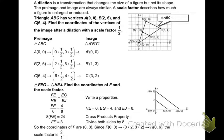A dilation is a transformation that changes the size of a figure but not its shape. The preimage and image are always similar. A scale factor describes how much a figure is enlarged or reduced. Triangle ABC has vertices A(0, 0), B(2, 6), and C(6, 4). Find the coordinates of the vertices of the image after dilation with a scale factor of 1/2. If it's a scale factor of 1/2, what they do is they just take everything times 1/2. So 0 times 1/2 and 0 times 1/2 gets me (0, 0). 2 times 1/2 and 6 times 1/2 is (1, 3). 6 times 1/2 and 4 times 1/2 is (3, 2). So I get my new coordinates by using that scale factor.